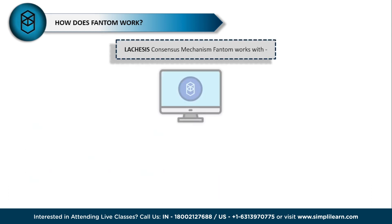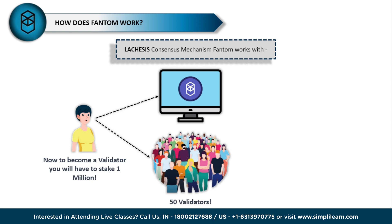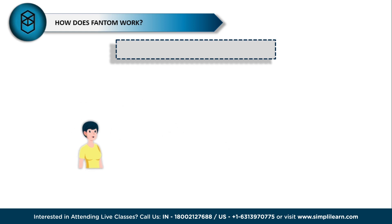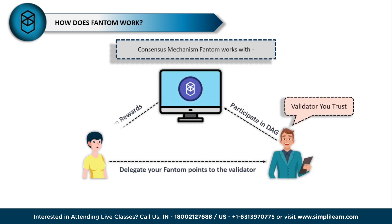Proceeding from that, Fantom works with a consensus mechanism. Fantom follows a special proof-of-stake model called Lachesis. Lachesis only has 50 validators, and to become a validator you will need to stake at least 1 million Fantom coins, which is currently a lot of money. However, you can delegate your Fantom coins to any other validator whom you trust, and that validator can participate in the DAG on your behalf so you can earn rewards.